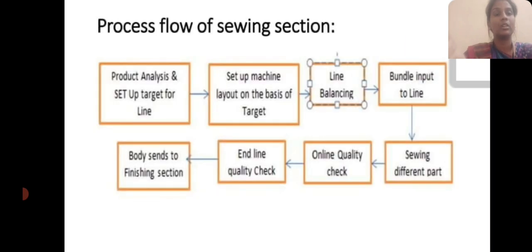Process flowchart of sewing section: product analysing and set up target for line; set up machine layout on the basis of target; line balancing; bundle input to line; sewing different parts; online quality check; endline quality check; body sent to finish section.